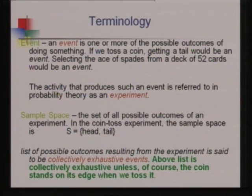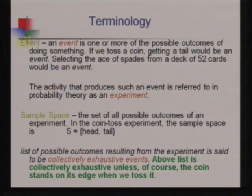When we combine all possible outcomes of an activity, this is called a list of collectively exhaustive events — all possible outcomes that can result from the experiment collected together.